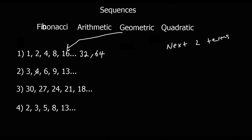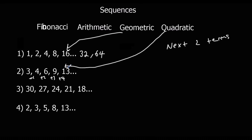The following sequence had differences of plus 1, plus 2, plus 3, plus 4 — so this is a quadratic sequence. The next difference is plus 5, giving 18, and then plus 6, giving 24.